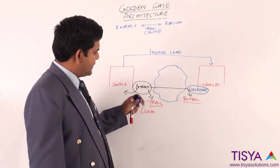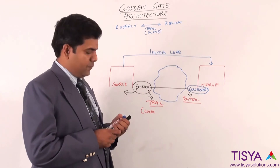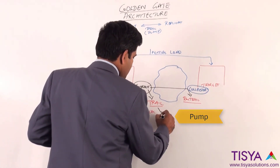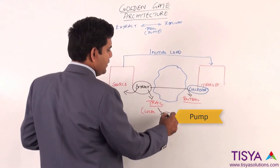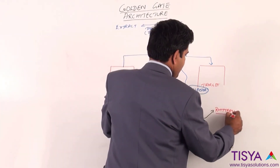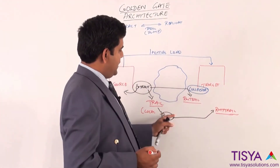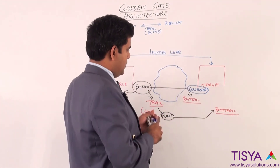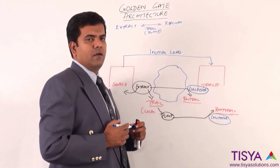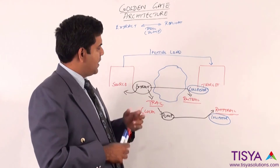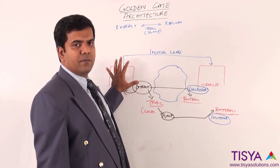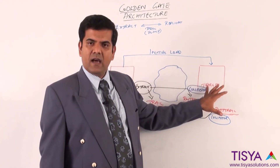In the case where a local trail is being written, we can initiate a process called a pump, whose responsibility is to publish the data to a remote trail. To receive the pump information, a collector process would have been started on the target machine. So there are two ways in which the trail information from the source can be written to the target.